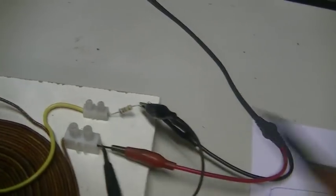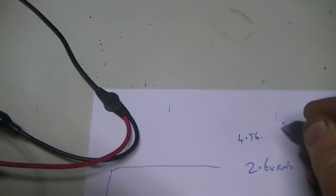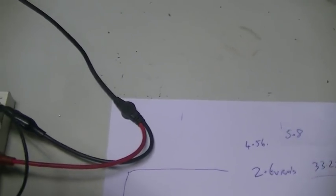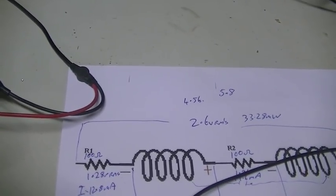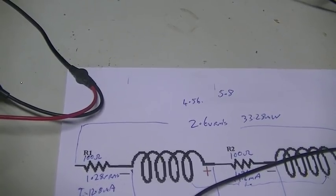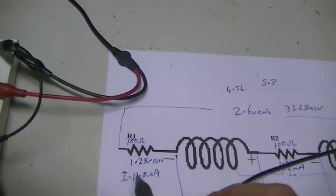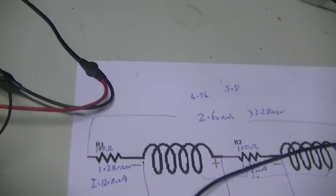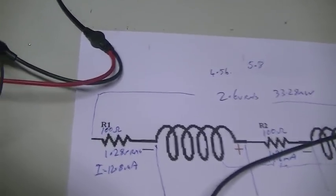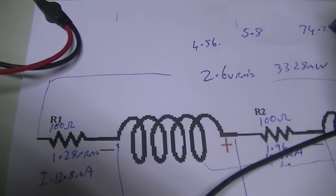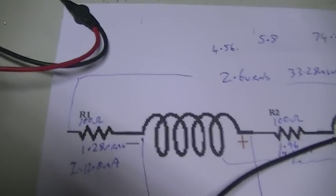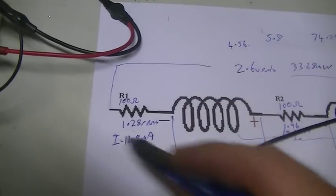Of course, our 4.56 was minus the voltage of that, but the unit as a whole, is 5.8, and we can now work out our total dissipated power, 5.8, times, where are we? 0.0128, so that gives us a 74.24 milliwatts of power being dissipated across our circuit as a whole.